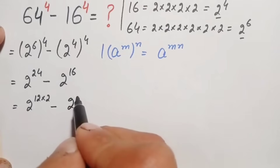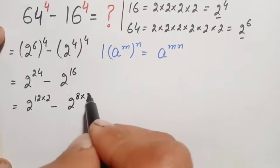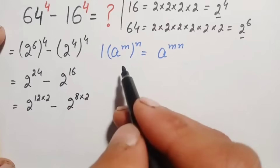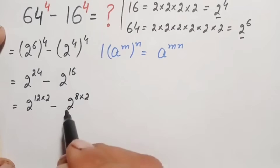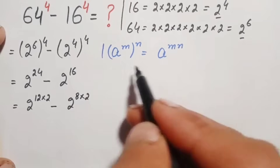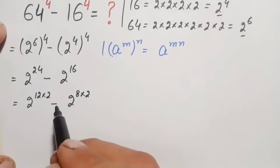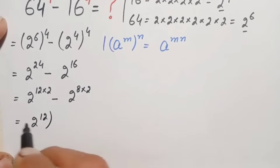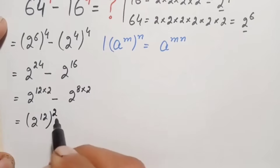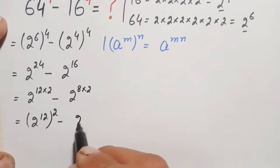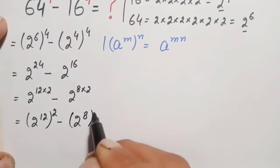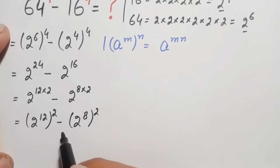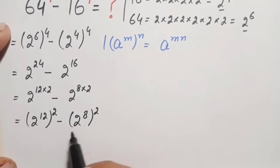We use the exponential identity again to change these two terms. The expression becomes (2^12)² minus (2^8)². Both terms are now in square form, giving us a² − b² where a = 2^12 and b = 2^8.